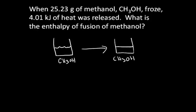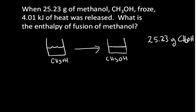We have a certain amount. We have 25.23 grams of methanol in our beaker that froze, and upon this freezing, a certain amount of energy was released. So we're assuming it's at constant pressure, and the energy that was released was 4.01 kilojoules. Whenever energy is released, we give it a negative sign because that's how we know the energy was released.